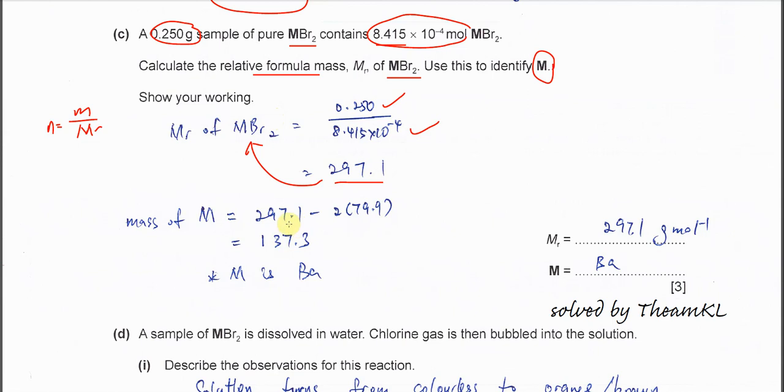Now we can get the mass of the metal easily because we know that inside the salt it has 2 bromide. We just need to use the molar mass that was calculated, minus 2 times the molar mass of bromide. So it's 2 times 79.9. So you get the mass of the metal M is 137.3, which is barium. Therefore the molar mass is this and M is barium.